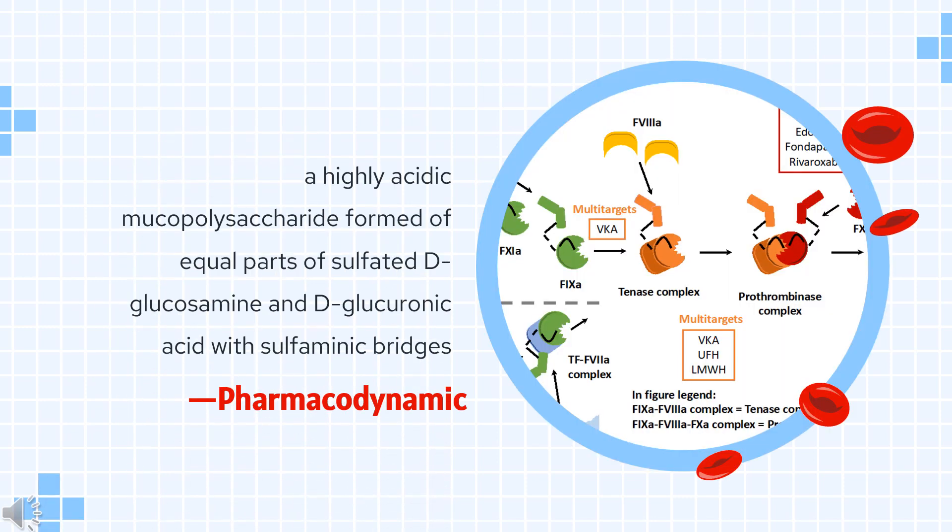Pharmacodynamics: Unfractionated heparin is a highly acidic mucopolysaccharide formed of equal parts of sulfated D-glucosamine and D-glucuronic acid with sulfaminic bridges. The molecular weight ranges from 3,000 to 30,000 daltons. Heparin is obtained from liver, lung, mast cells, and other cells of vertebrates. It is a well-known and commonly used anticoagulant with antithrombotic properties.